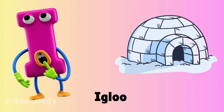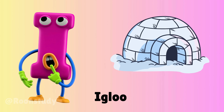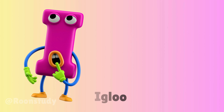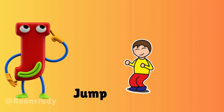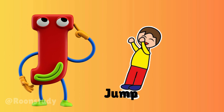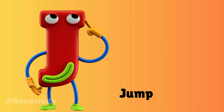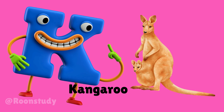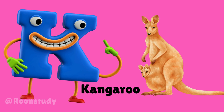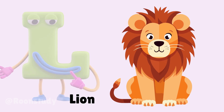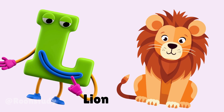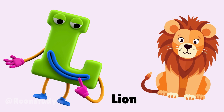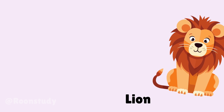I is for igloo, i-i-igloo. J is for jump, j-j-jump. K is for kangaroo, k-k-kangaroo. L is for lion, l-l-lion.